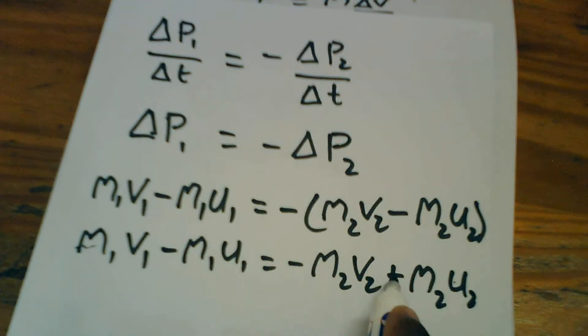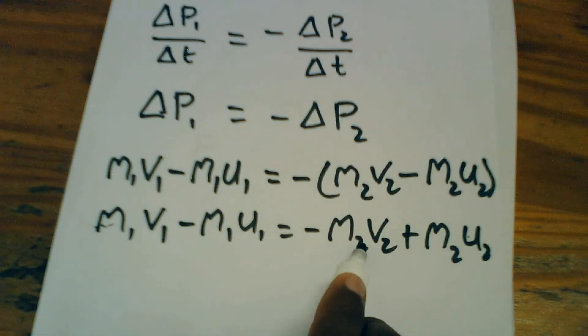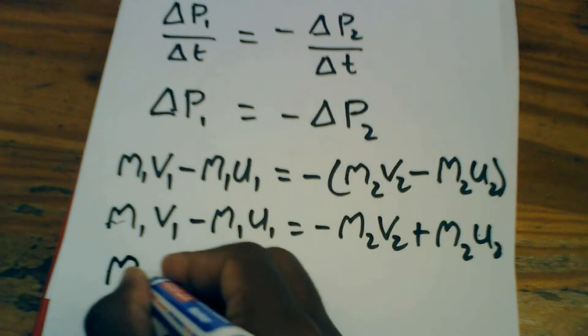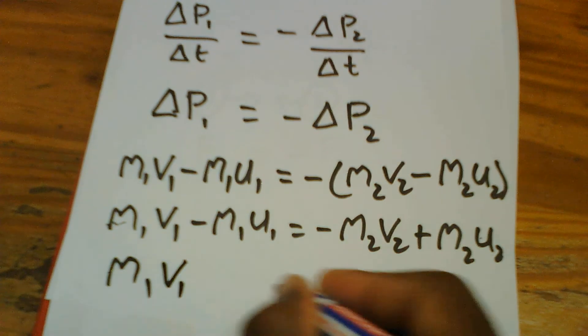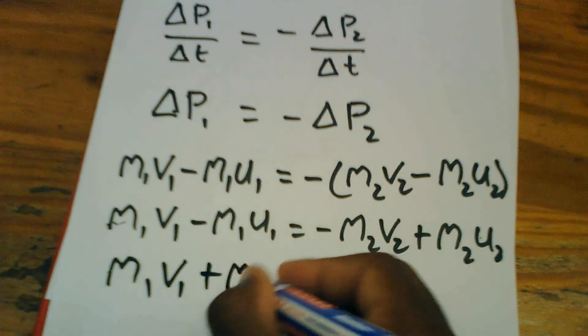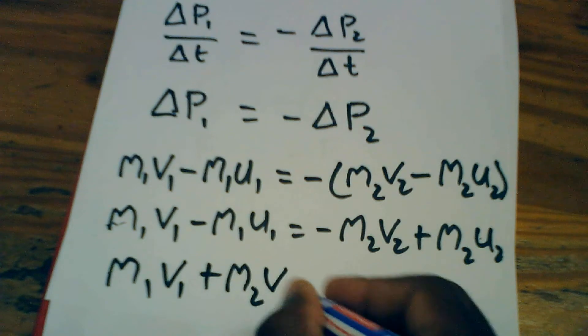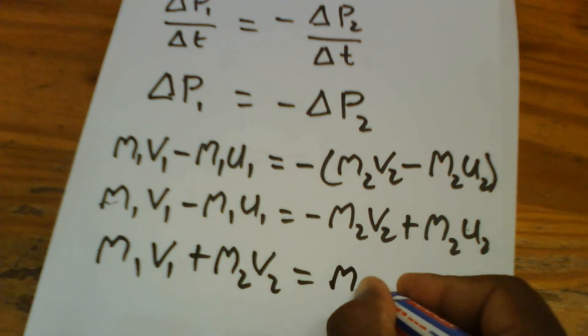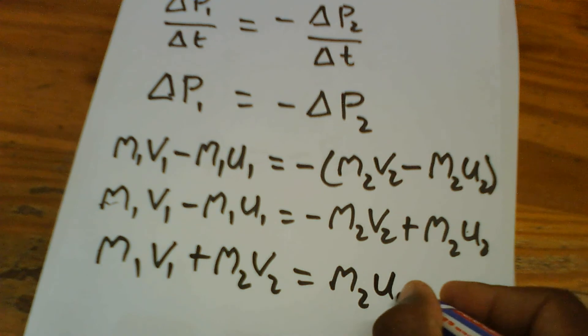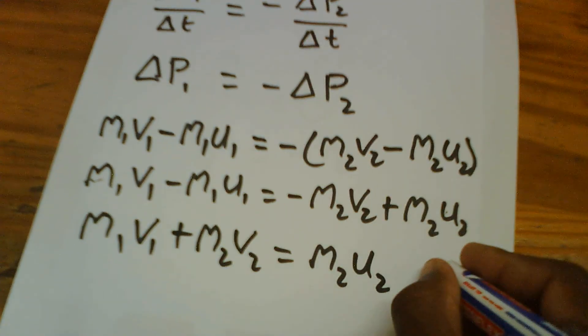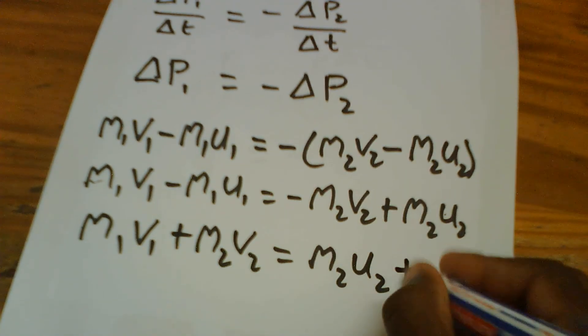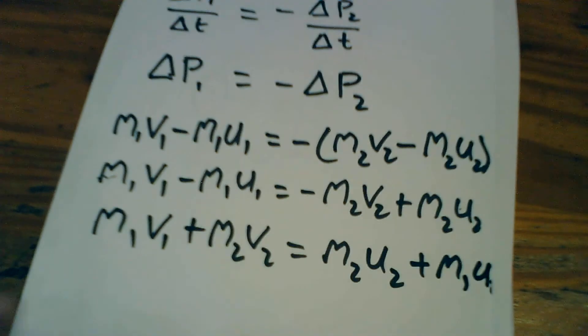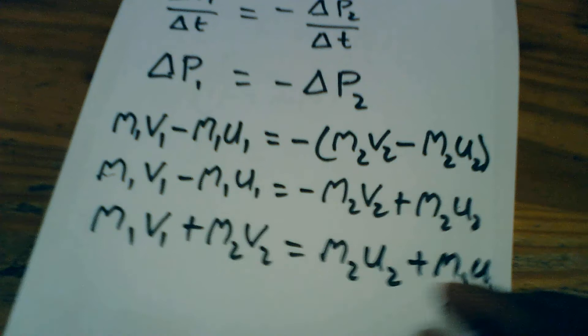Negative and negative is positive. So, if we take this to the other side, we're going to get negative M1V1 plus M2V2 equals to M2U2 plus M1U1, which is the equation we were proving.